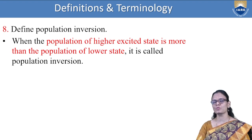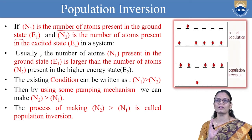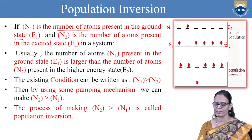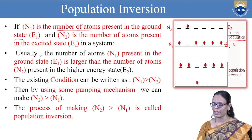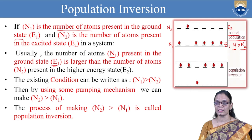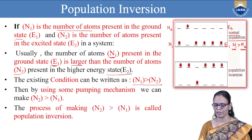Define population inversion. To understand it, first we need to know what population means — the number of atoms present in the ground state or in a particular system. Normally, if E₁ is the ground state and E₂ is the excited state, N₁ is the number of atoms in the ground state and N₂ is the number in the excited state. In normal conditions, N₁ is always greater than N₂ — more atoms are in the ground state than in the excited state.